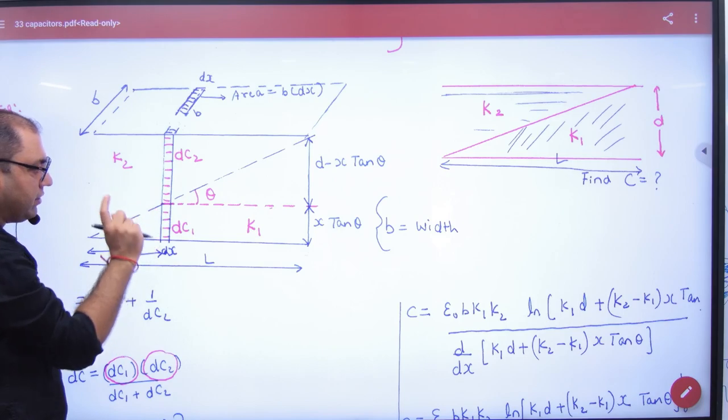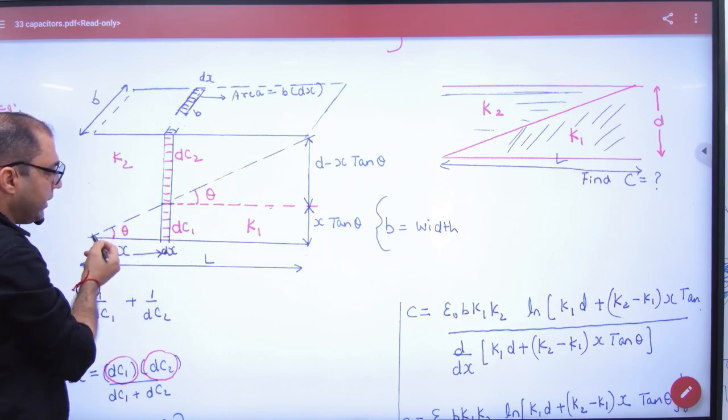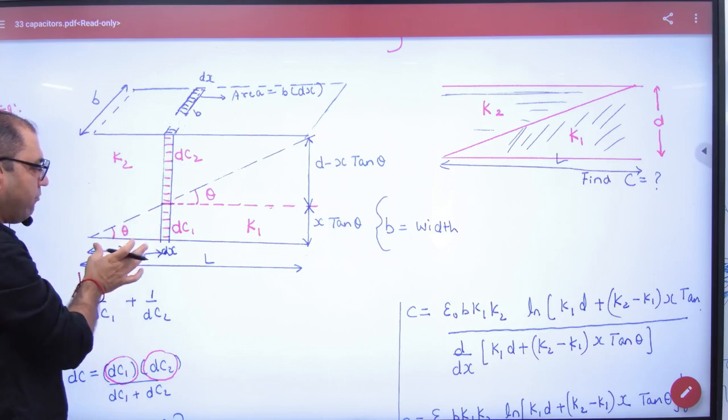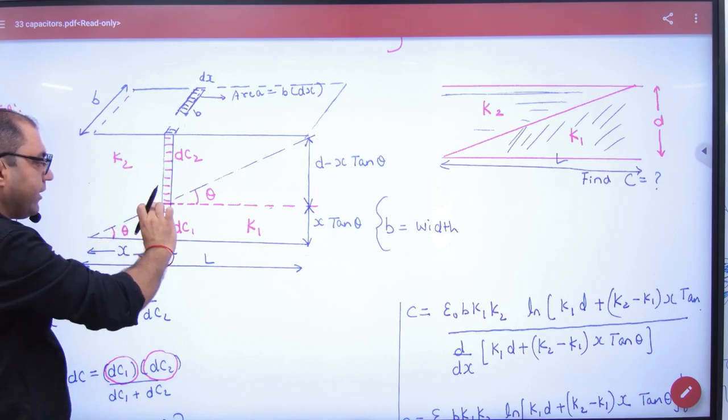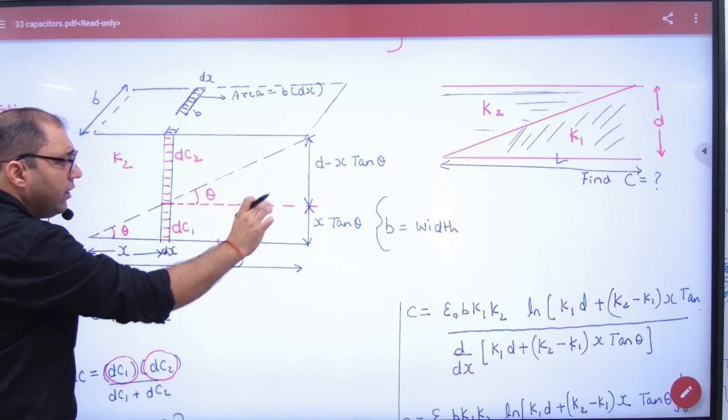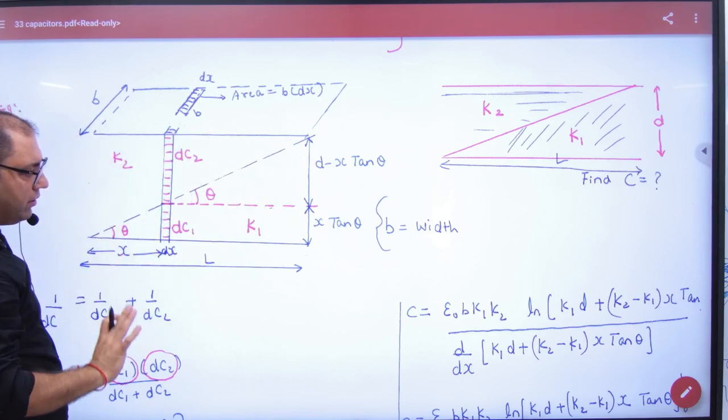This is dc2, dc1. You have a line join of theta, theta corresponding. This is total length L. You have taken the element to x distance. So if it is x and theta, then it will be x tan theta. If the total distance is d, then it will be d minus x tan theta.